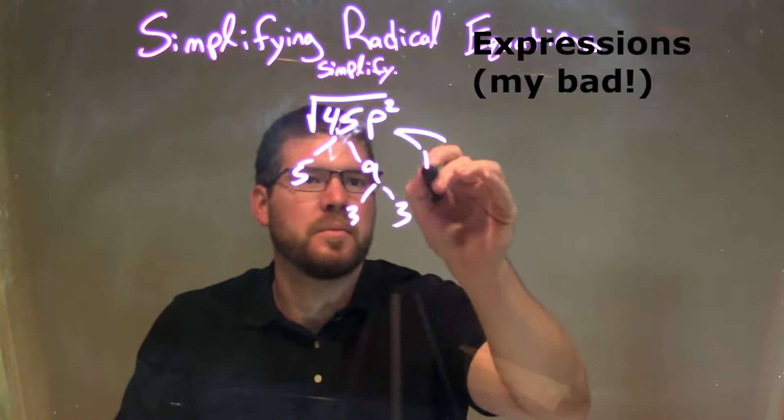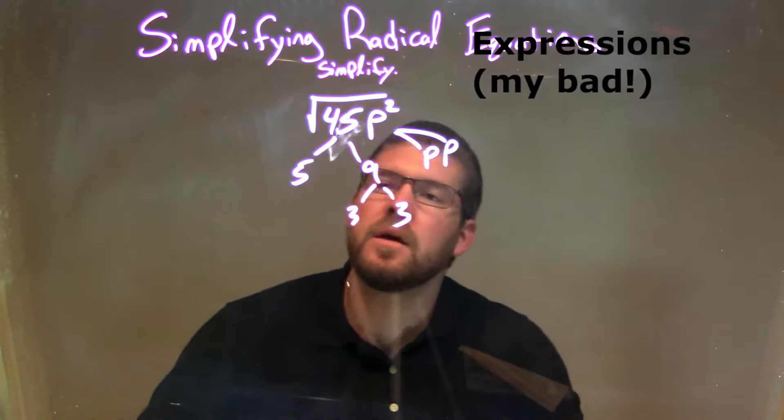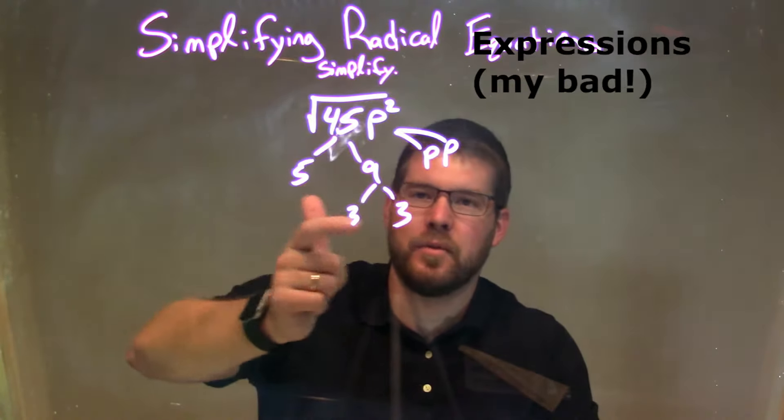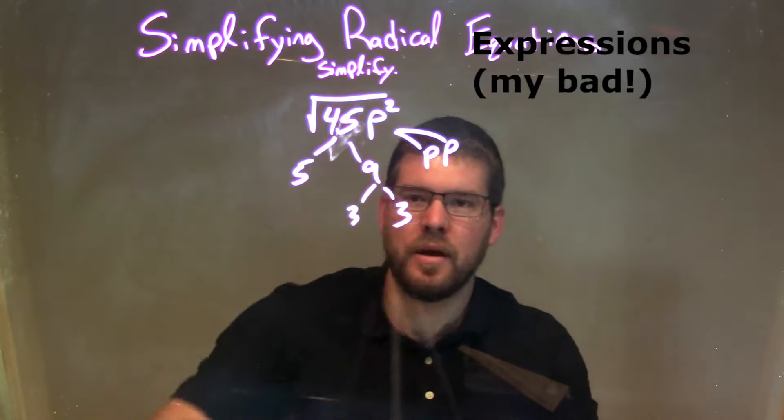p squared is just p times p. So our prime factorization of 45 is 5 times 3 times 3, and p squared is p times p.